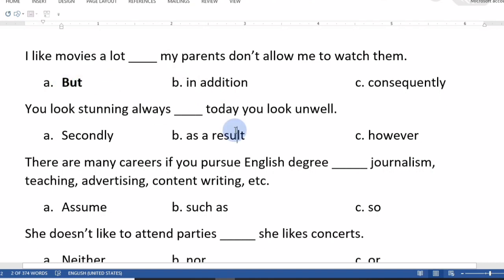Number two: You look stunning always, today you look unwell. The options are secondly, as a result, or however. However is the right answer. However today you are looking unwell.